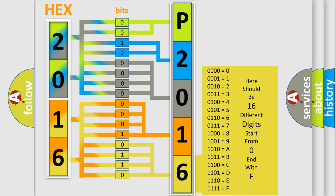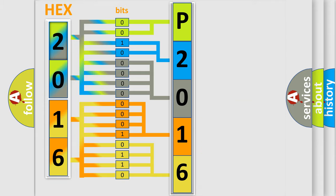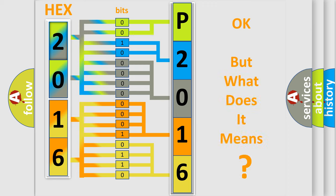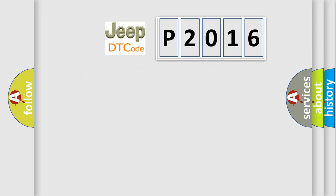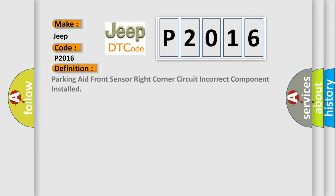We now know in what way the diagnostic tool translates the received information into a more comprehensible format. The number itself does not make sense to us if we cannot assign information about what it actually expresses. So, what does the diagnostic trouble code P2016 interpret specifically for Jeep car manufacturers? The basic definition is: Parking aid front sensor right corner circuit — incorrect component installed.